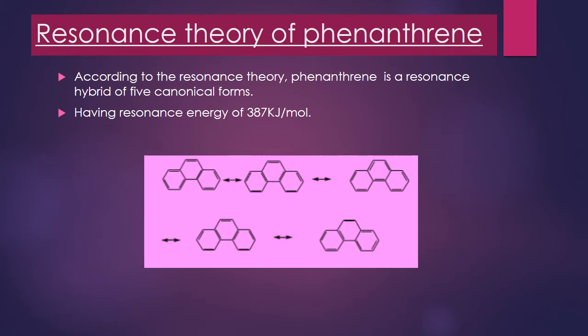Coming to the resonance theory of phenanthrene. It is an aromatic compound and is a resonance hybrid of five canonical structures, having a resonance energy of 387 kJ per mole. It is more resonance stabilized than anthracene because most of the resonating structures have two benzene rings intact.